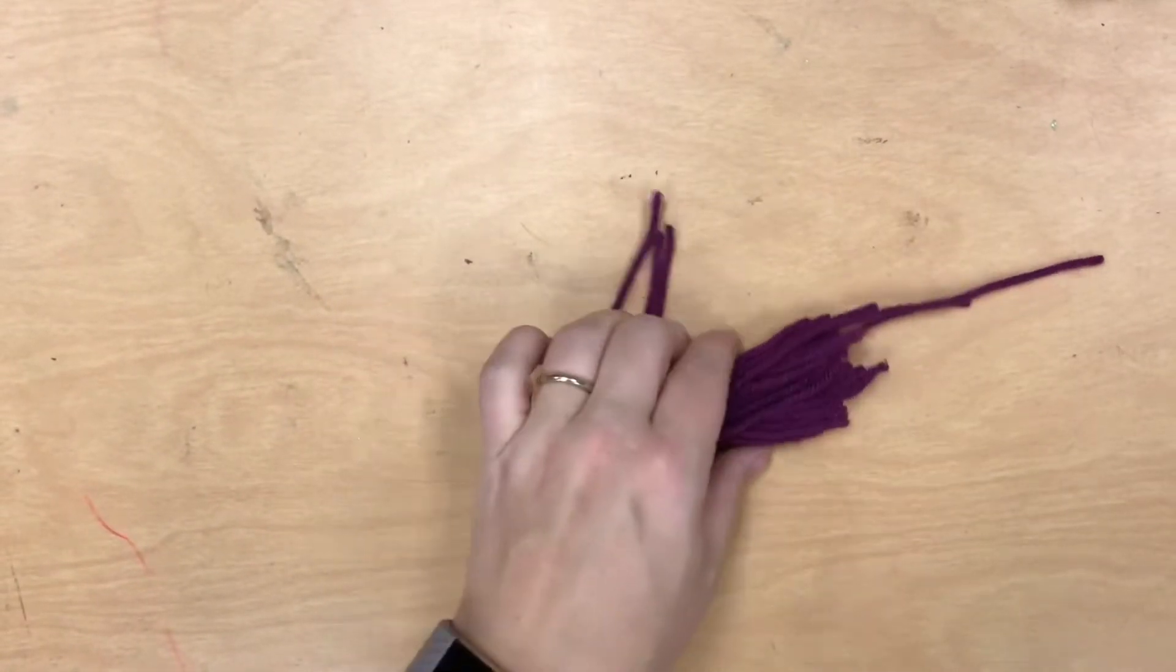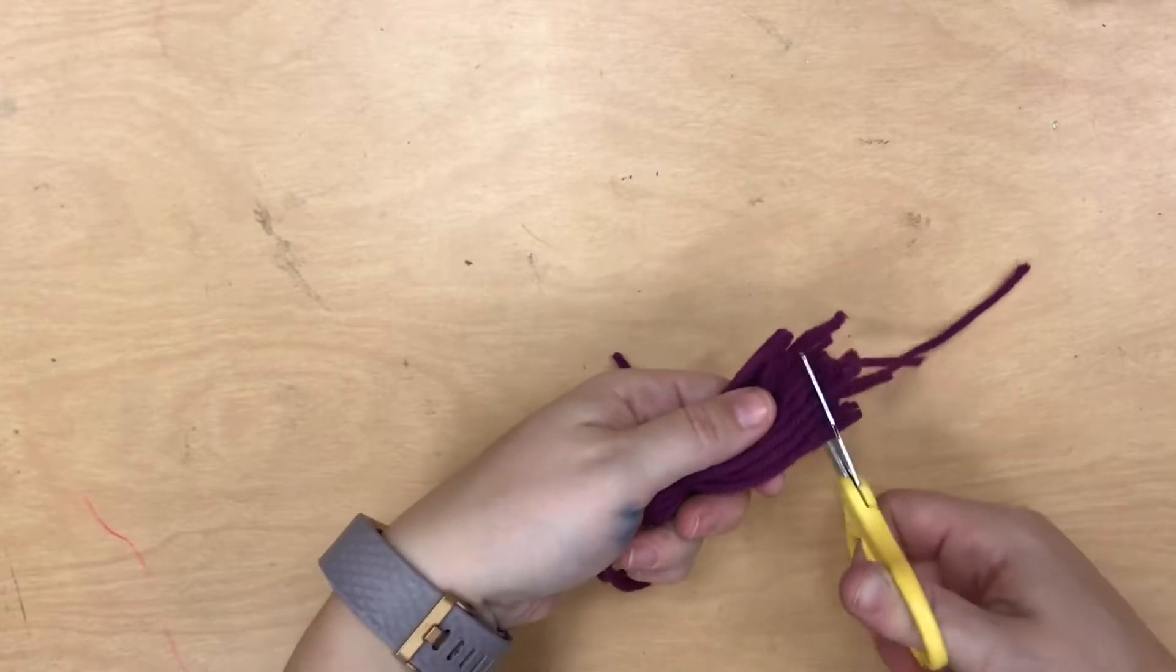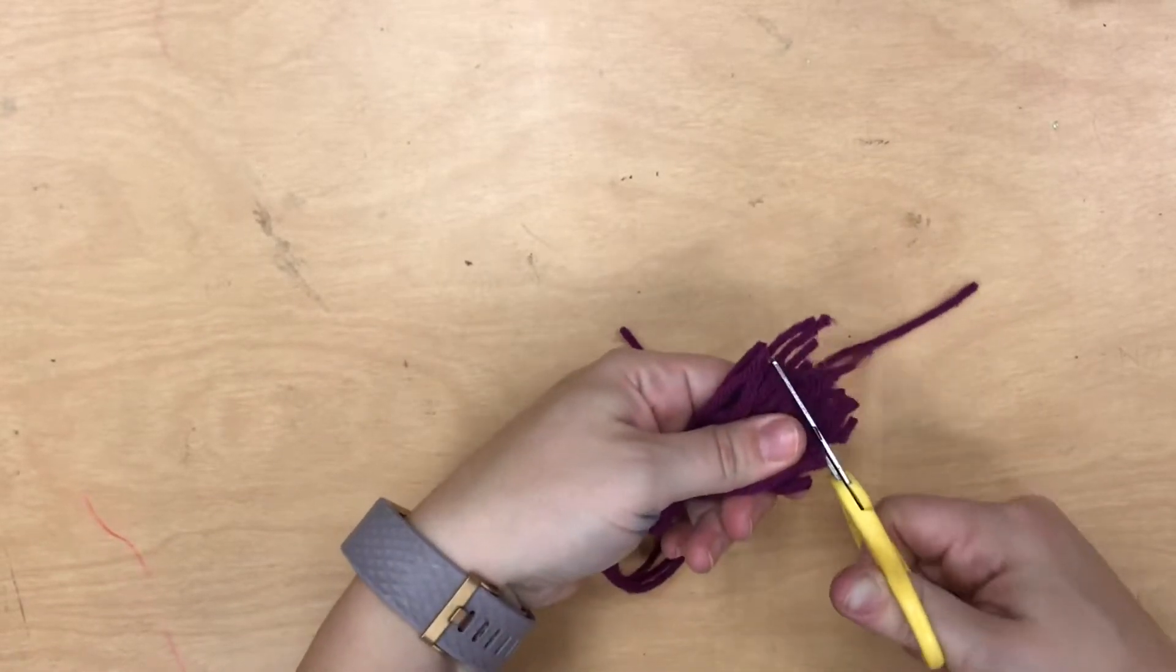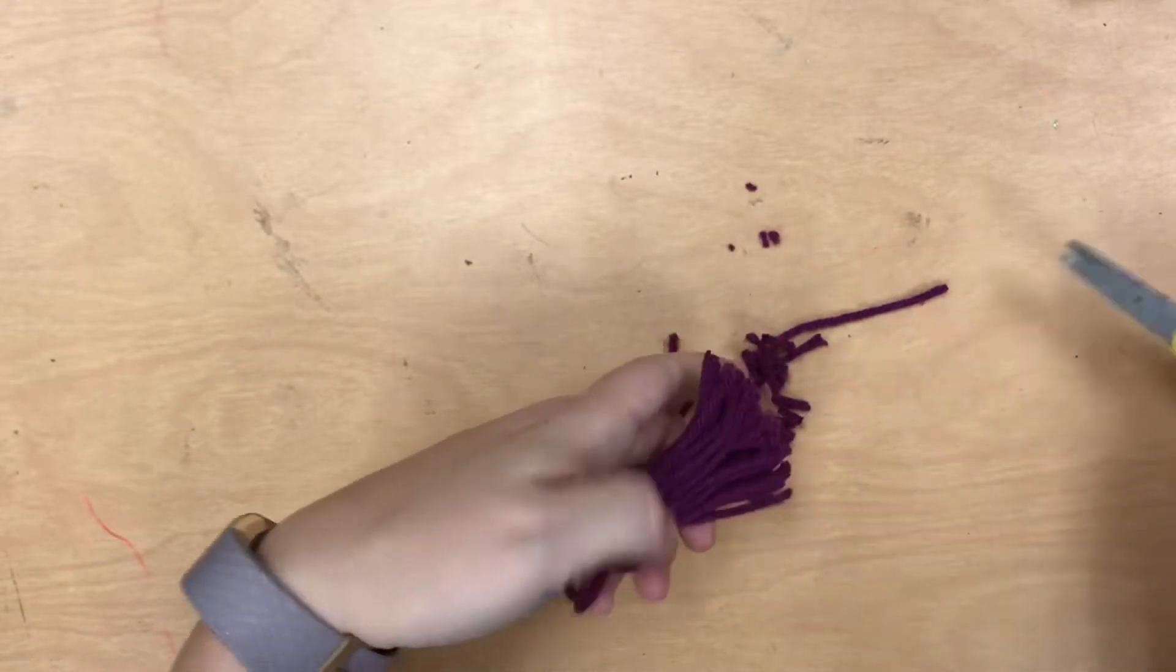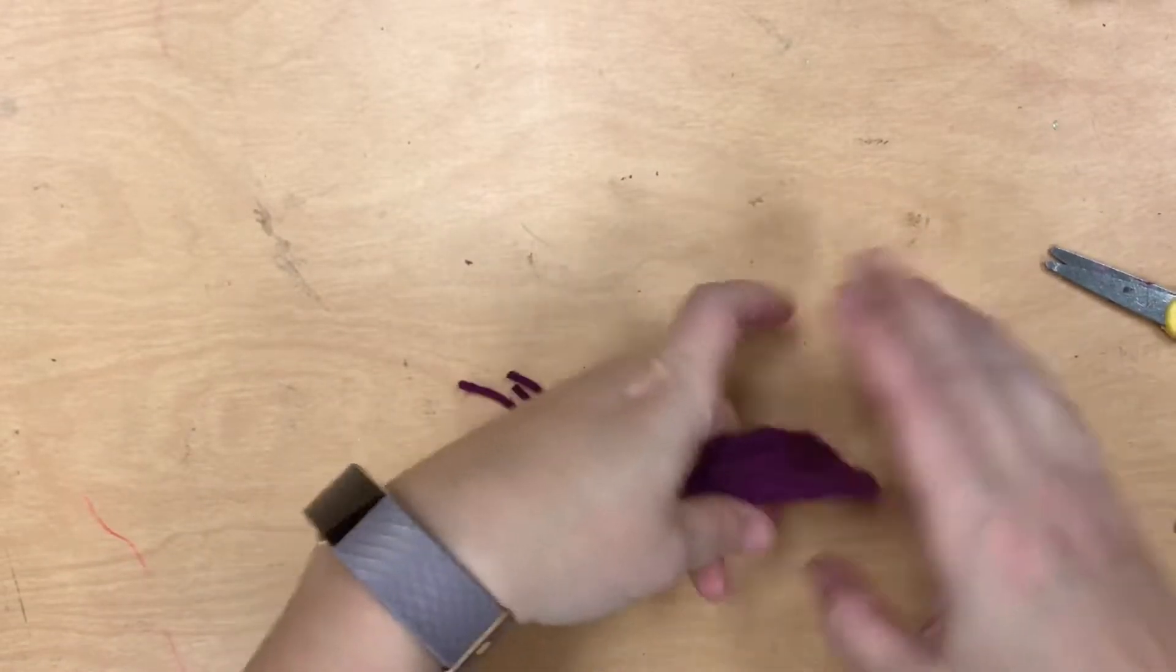This is ready to be tied onto your loom. If you want to, you can trim the bottom fringe of your tassel to make it even, and it might be a good idea if you have some long pieces.